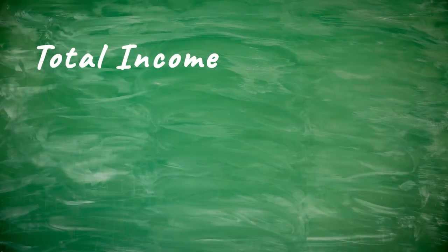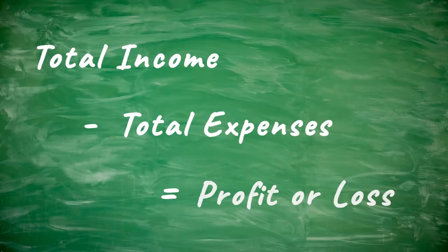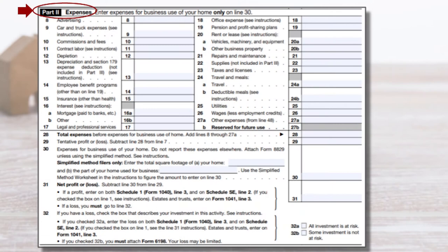Next, it adds up all of your expenses. You want to check out my other video on what you can and can't deduct so you can make sure you're including the right items here. It takes that total income minus total expenses and gives a result whether that was positive or negative, letting you know if you had a profit or loss. The IRS has already predetermined a list of expense categories in Part 2, from advertising all the way down to other expenses. You should be going through this list and making sure your expenses fit into these categories and follow the rules for what you can and can't deduct.